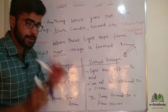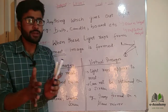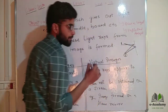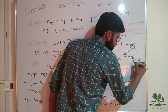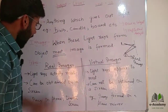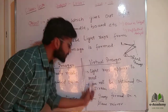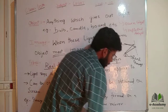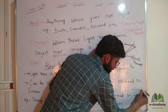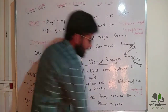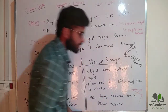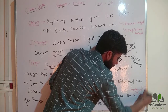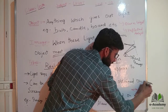Now what is the real image? If the actual light rays actually meet, we will say this image is the real image. Now if these light rays appear to meet, we will say that is a virtual image. For example, I have a point object. These light rays reflect from here in different directions. When we produce these reflected light rays backwards, they will meet at a point. So this image is the virtual image.